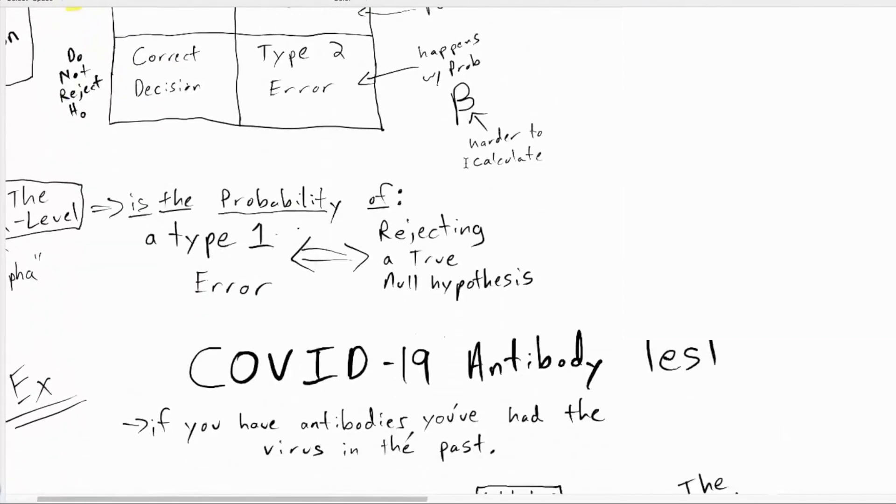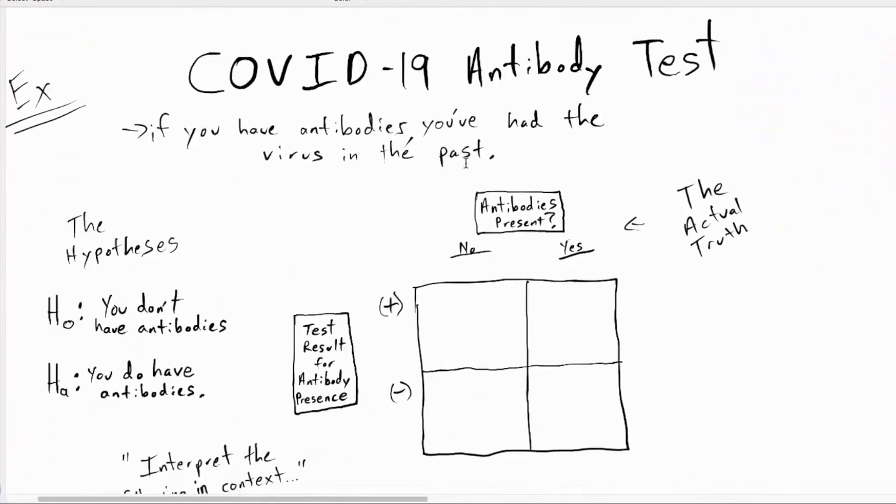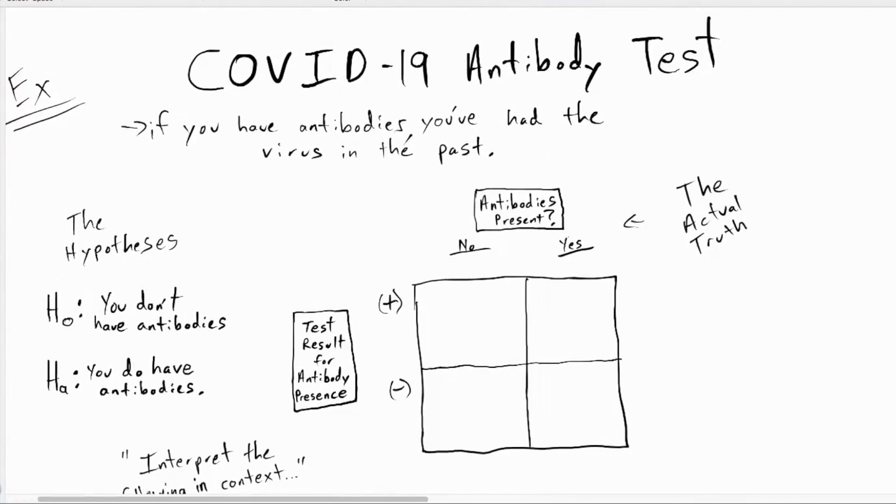Example I want to look at is if you are taking this COVID antibody test. It's a test that is going to make a determination of whether you have antibodies inside of you, which basically is indicating you've had the virus in the past. Why would anyone do that? Figure out if they've had the virus in the past. To know if you have immunity to the virus? Yeah. When you've had them in the past, a lot of times that means that you have immunity to it.